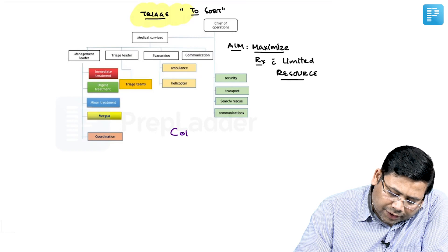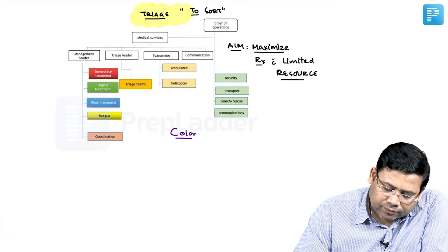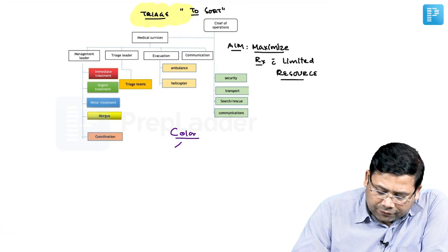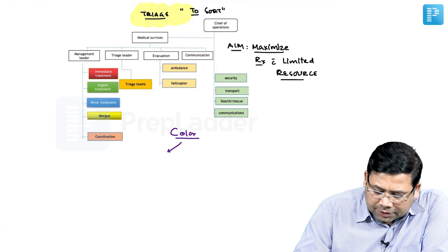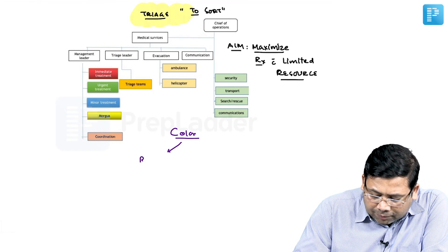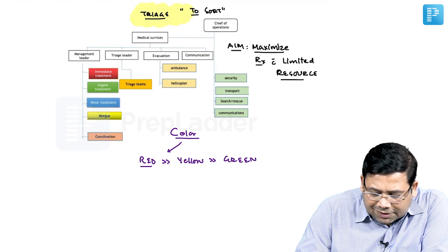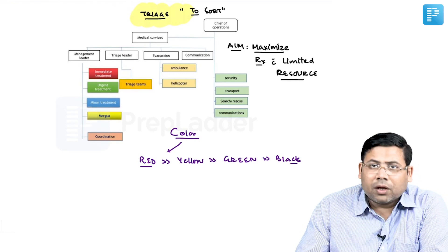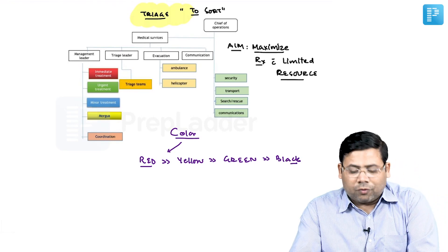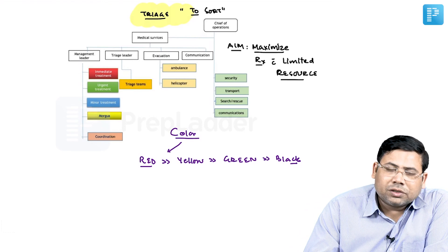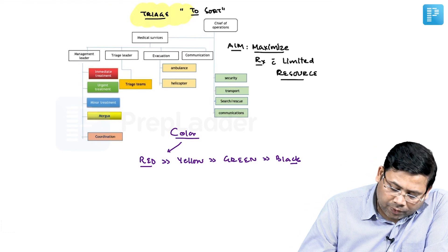The color priority that we have: the most important category is red, then yellow, then green, and then black. This is the simplest version of triage. We also have a blue category, but blue is now replaced by black only.